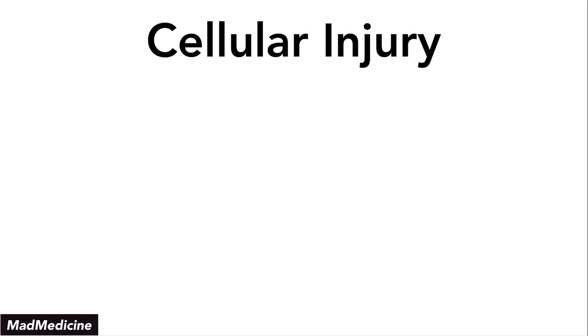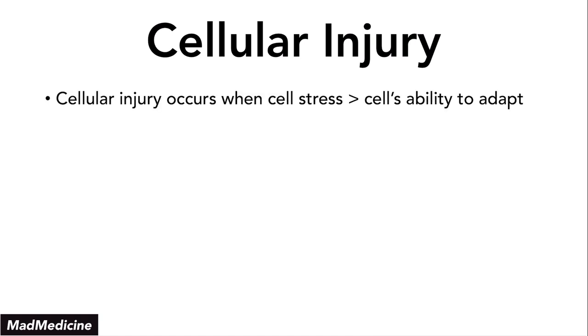Keep in mind, our cells are able to handle a lot of stress and they have actually developed coping mechanisms for the stress that they're placed under. Eventually, however, if too much stress is being put on a cell, our cells will get damaged. Essentially, when you have cellular injury, you're going to see that the amount of stress put upon a cell exceeds our cell's ability to adapt — there's just too much stress. And the damage that can happen is going to be very wide ranging.